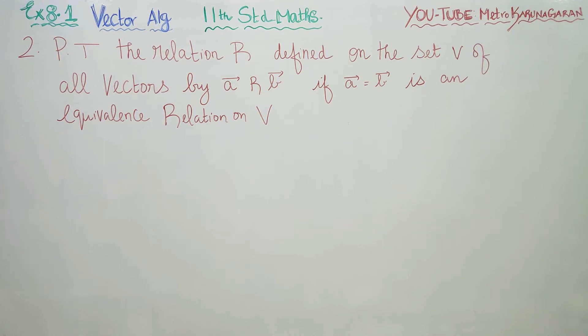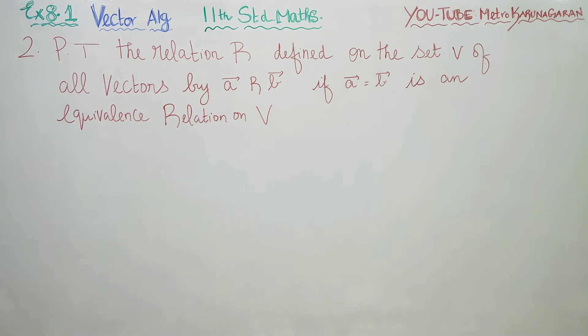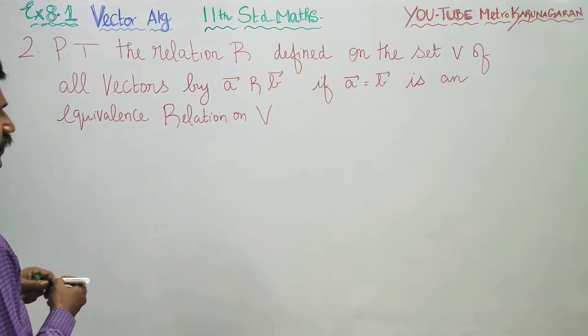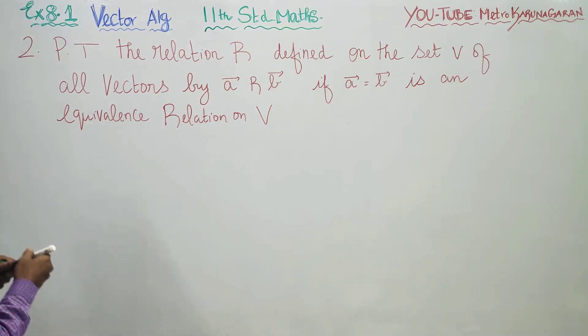Dear Levin Standard students, in exercise number 8.1, sum number 2, prove that the relation R defined on the set V of all vectors — A is related to B.